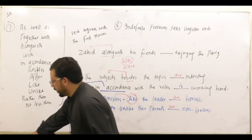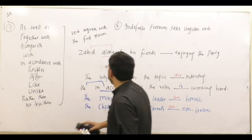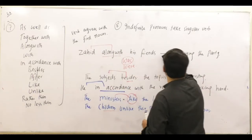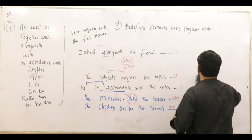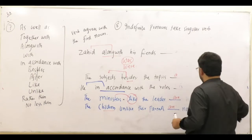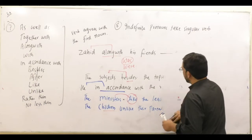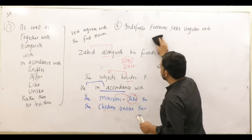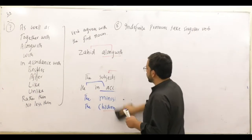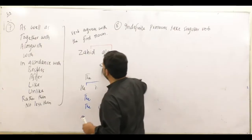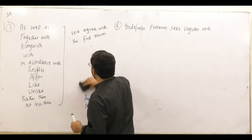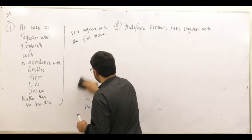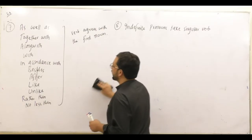Hopefully, rule number seven — we have no confusion. Rule number seven: when you have these phrases — as well as, together with, along with, besides, like, unlike, in accordance with — the verb agrees with the first noun.